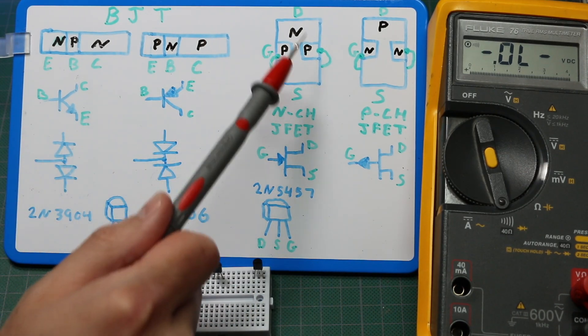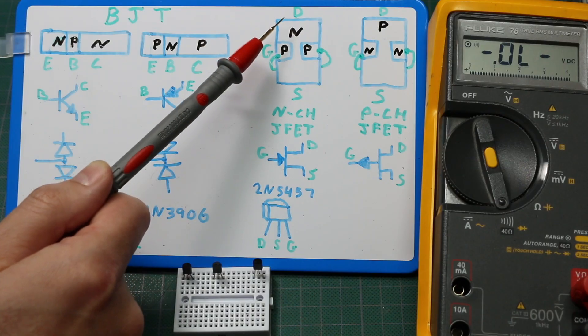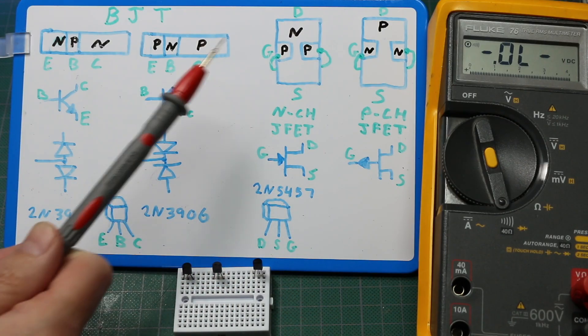So the PN junctions here look okay and it's hard to tell the difference between source and drain when probing like this.